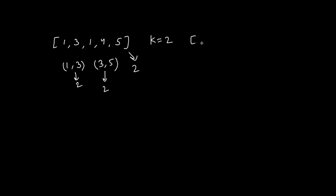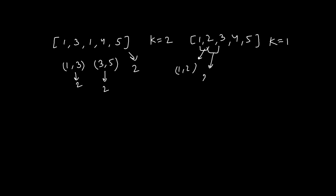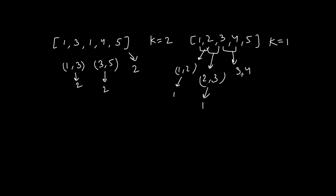Let's take another example. We have one, two, three, four, and five, and k in this case is one. So here we have four possible pairs: one-two (absolute difference one), two-three (absolute difference one), three-four (absolute difference one), and four-five (absolute difference one). So in this case we will return four as our answer.